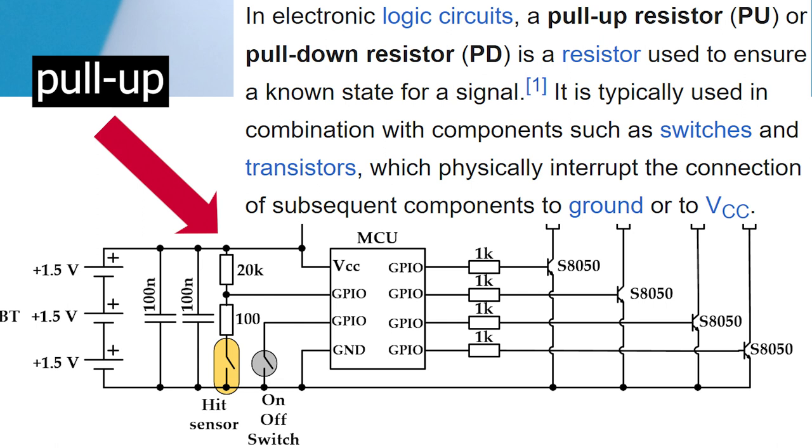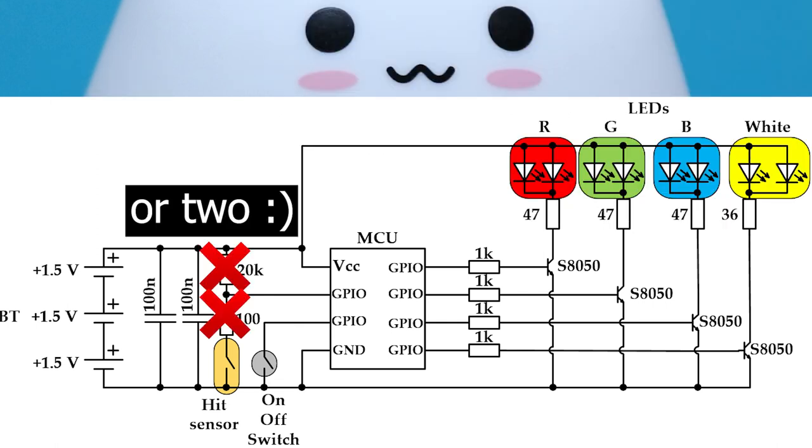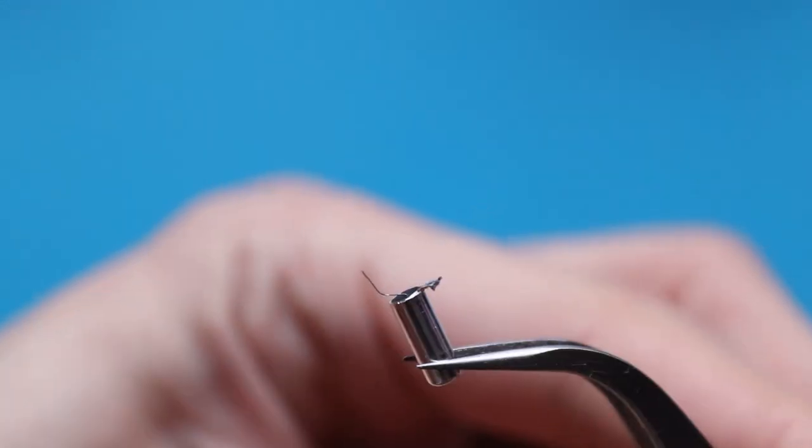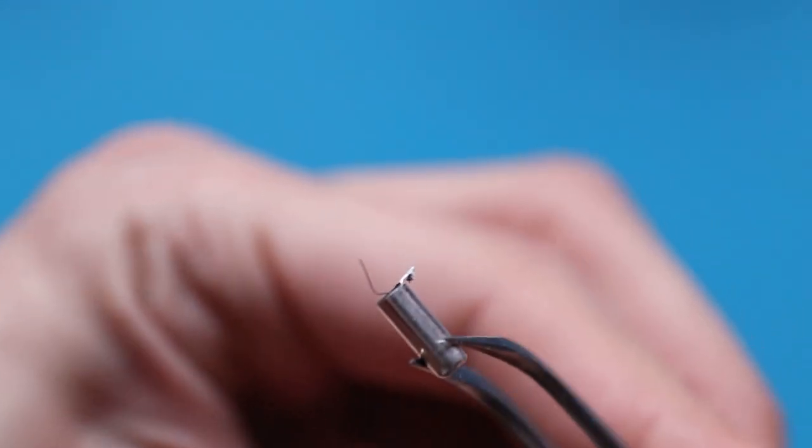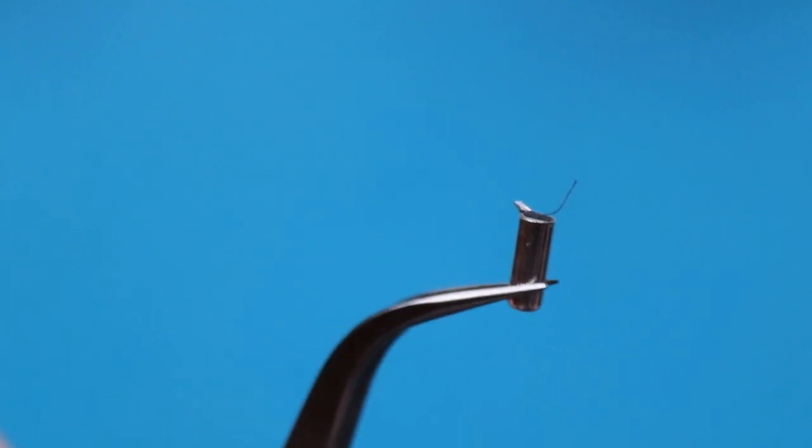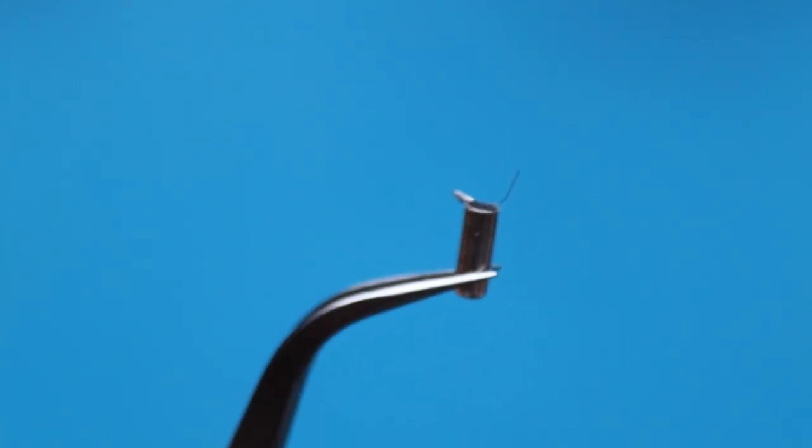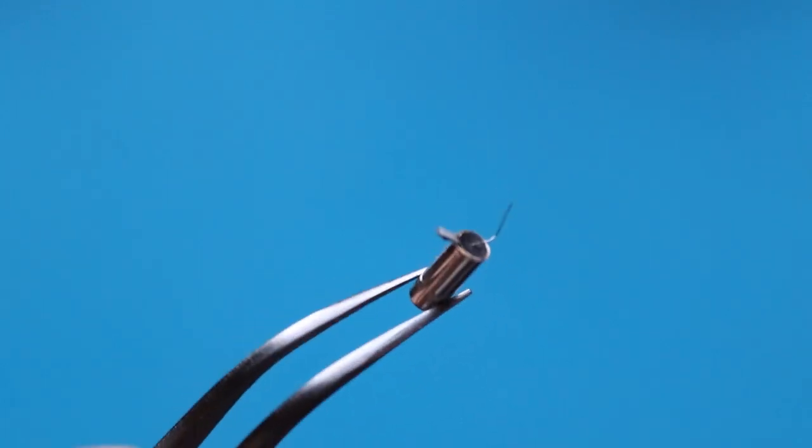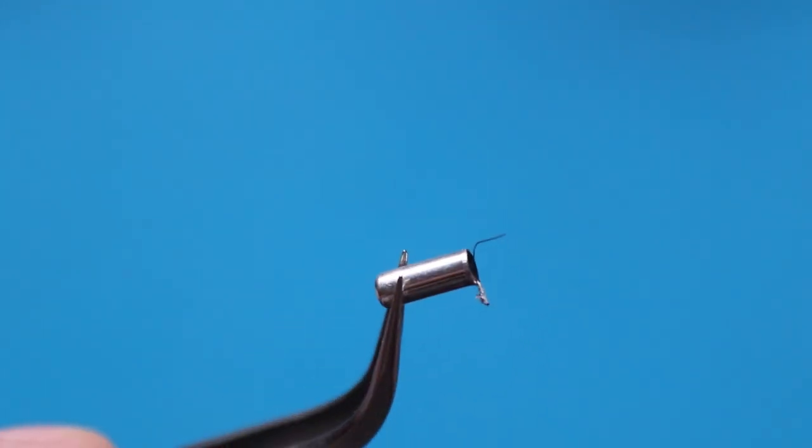By using internal pull-up, for example, you can just get rid of one component from a board and make the device cheaper. I don't know why they didn't use internal one. Now it is time to see how this hit sensor works, which is really interesting. As you can see, its structure looks pretty simple, it has only two pins. One is connected to the case, while another sticks from the center, so let's open it and look inside.